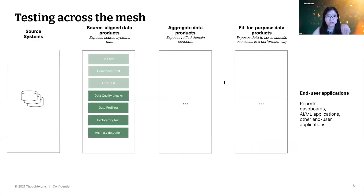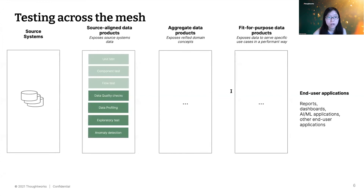Now zooming out. On the left, we have source-aligned data products whose transformations are often — though not always — simpler. Because they are usually simpler, tests on transformations are usually a little less useful; the graying out here means they may be less useful, but not don't do it. Instead, we can focus more on data quality checks to ensure data flowing downstream is good enough. Data quality issues spotted here, especially when there's minimal transformation, should ideally be fed back as improvements to the source systems themselves.